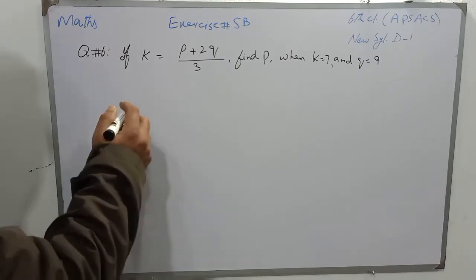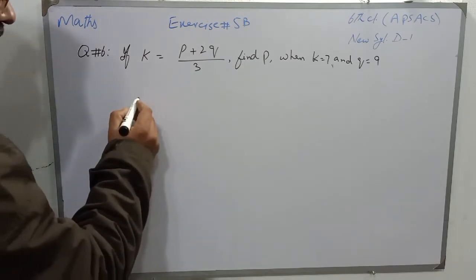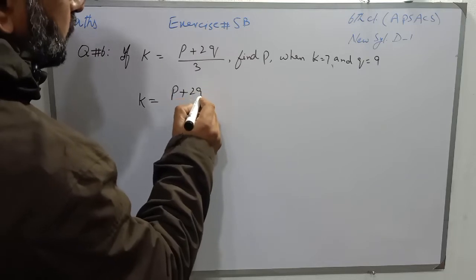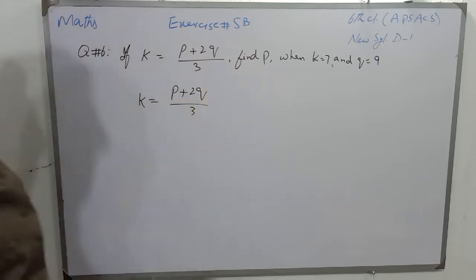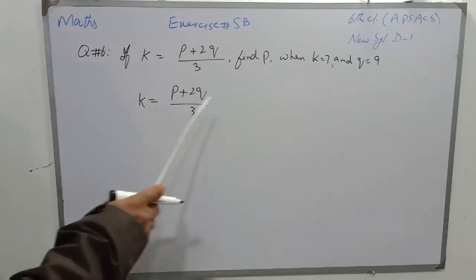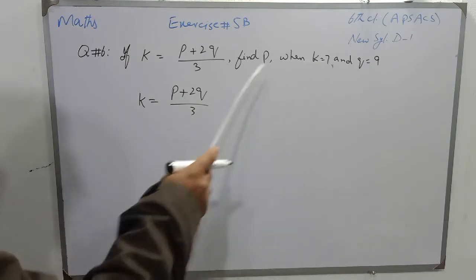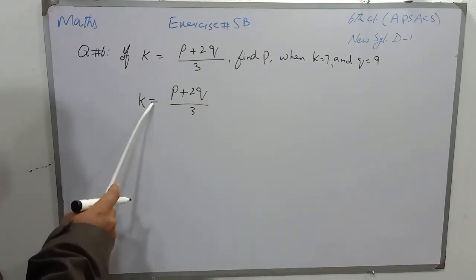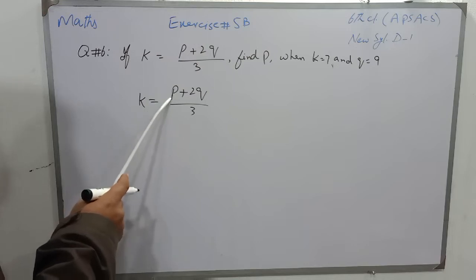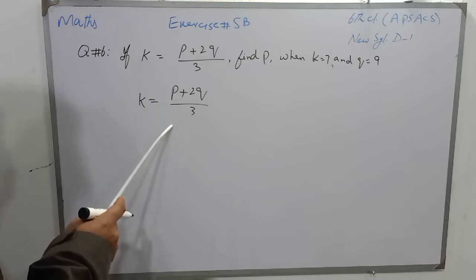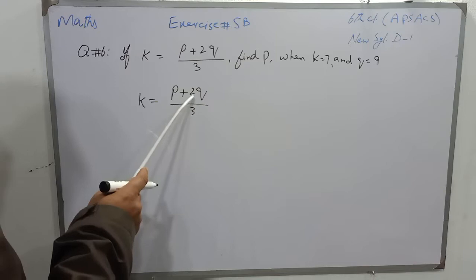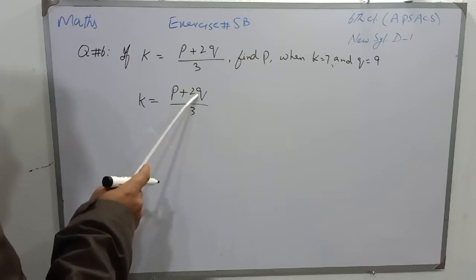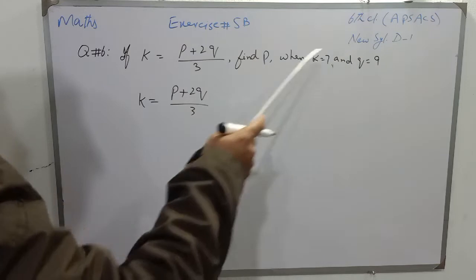First we have to write the formula, and that formula is k is equal to p plus 2q over 3. Now, in place of k, the value of k is 7, so 7 will be written. Then we will put the equal sign, and p we have to find, so p is written as it is, plus 2 into q, and the value of q is 9.